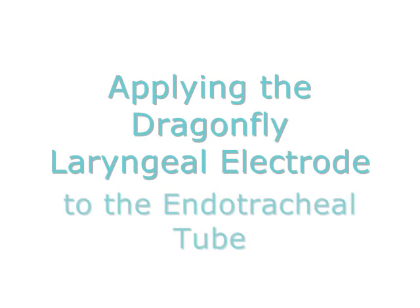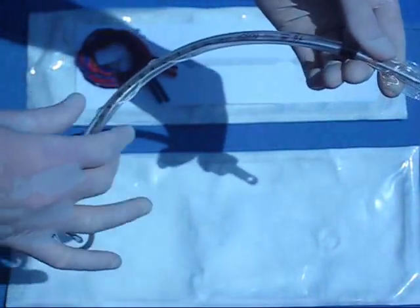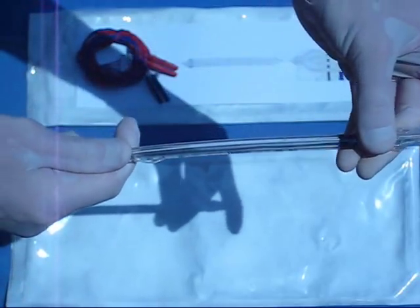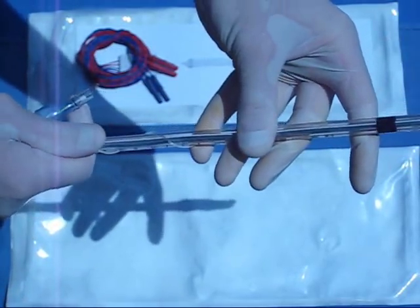Applying the Dragonfly laryngeal surface electrode. To begin, choose any non-silicone ET tube free of lubricants or other materials that may inhibit electrode adhesion. Use a stylet to straighten the ET tube and set it aside.